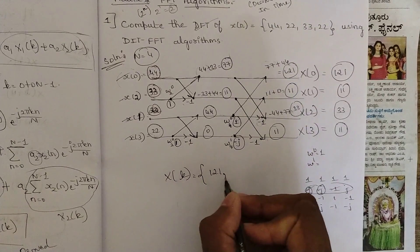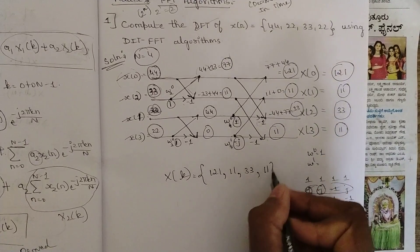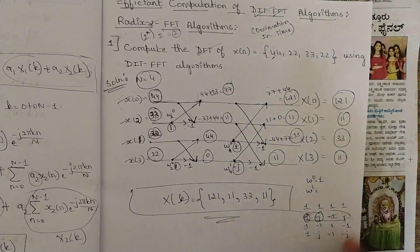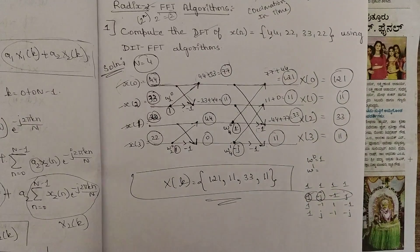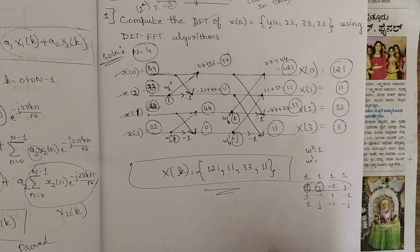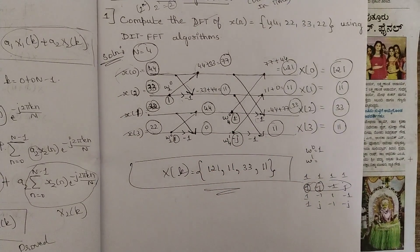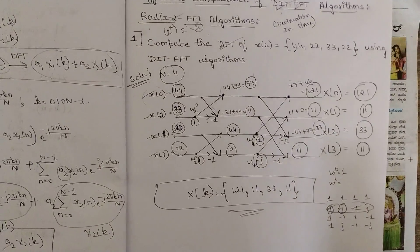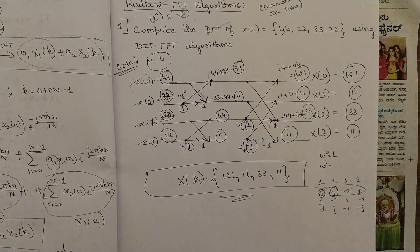The final result is X(k) = {121, 11, 33, 11}. As you can see, this entire 4-point DFT was solved in half a page. If we had used the matrix method or formula method, it would take one and a half to two pages. So the DIT-FFT algorithm is much more efficient. In the next part of this session we'll solve an 8-point DFT, which is more interesting and tricky — keep the page horizontal to have sufficient space.